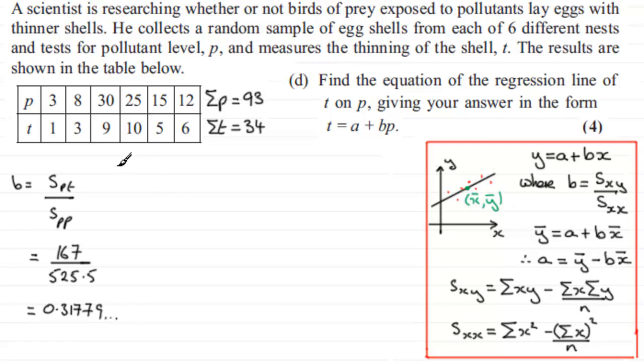Now we need to work out what a is in the equation here. And to get a, remember a is equal to y bar minus b times x bar, when you've got y against x. But to get a for us, we know that if we rearrange this, a is going to equal t bar, the mean of t, minus b times p bar, p bar being the mean of p.